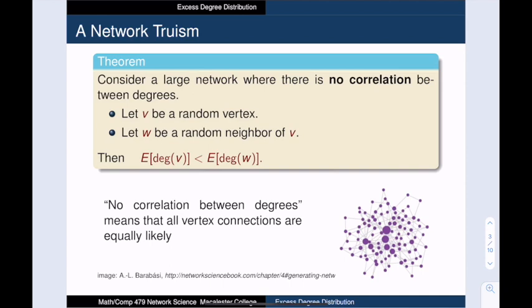Here's what I mean using network terms. Consider a very large network where there is no correlation between the degrees. This is another way of saying that the edges between vertices are entirely random. Let v be a randomly chosen vertex.